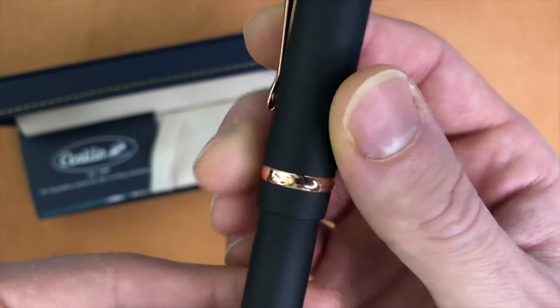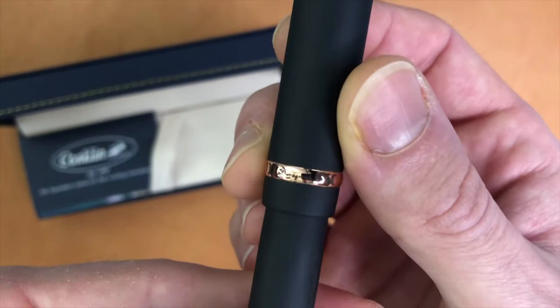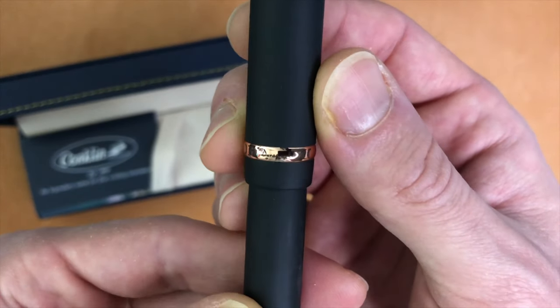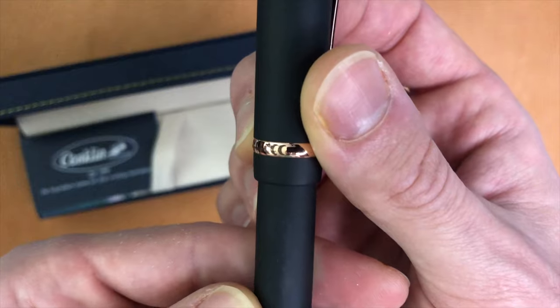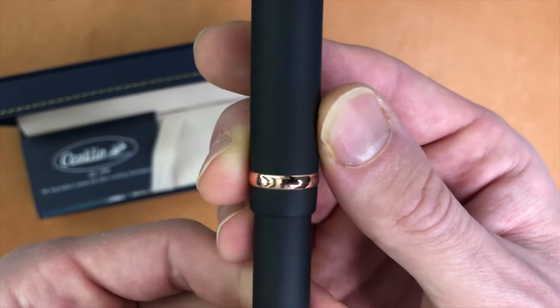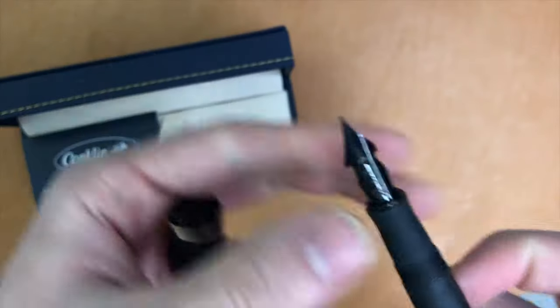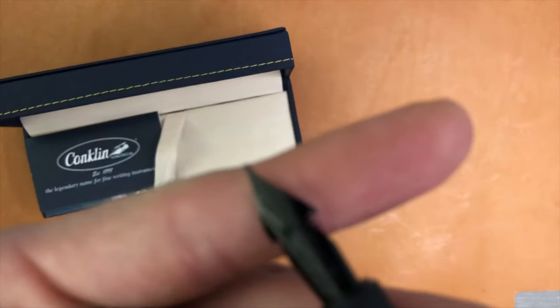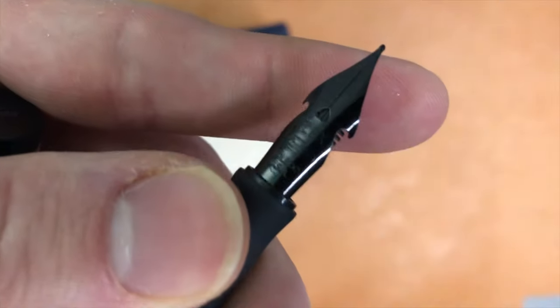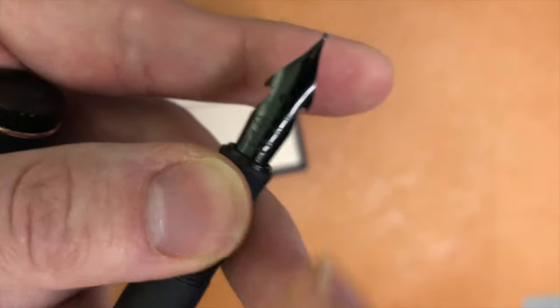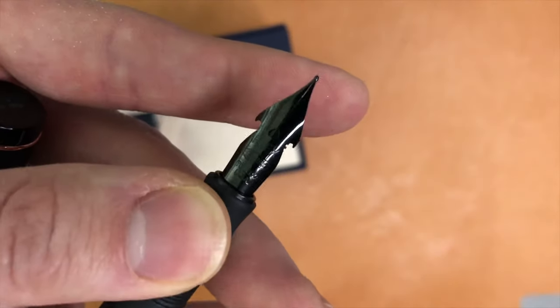Conklin on the cap band. What is that? Oh, it says Duragraph. Very, very small. And we have some crescent shapes. I guess to mimic a crescent-shaped breather hole. Oh, this one doesn't have it. Never mind. Usually their breather hole is a crescent shape.